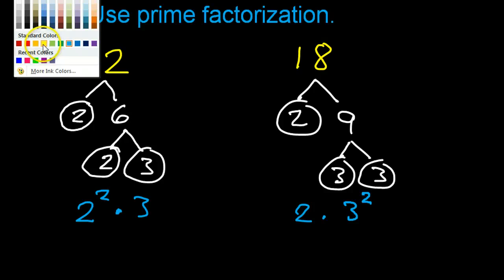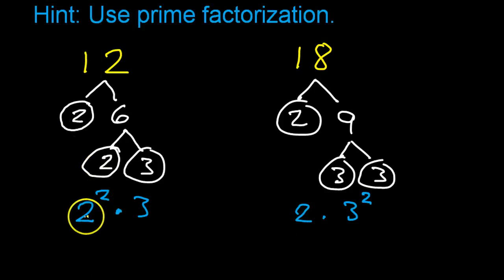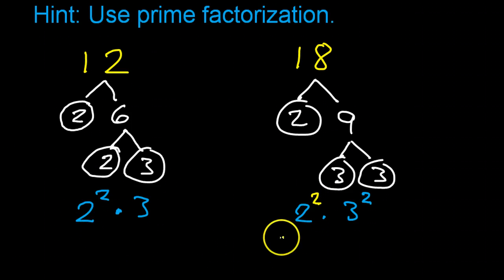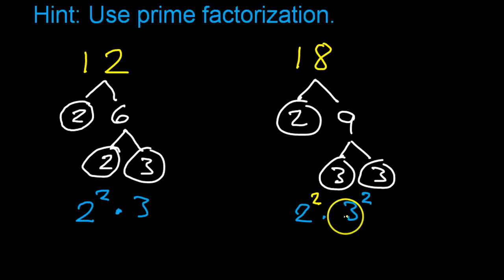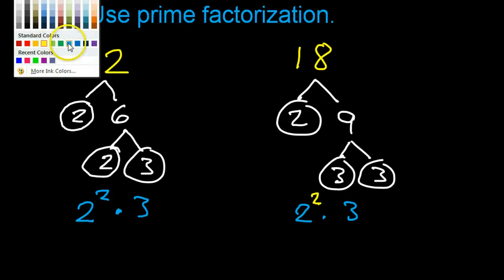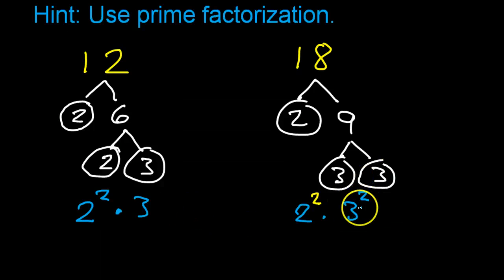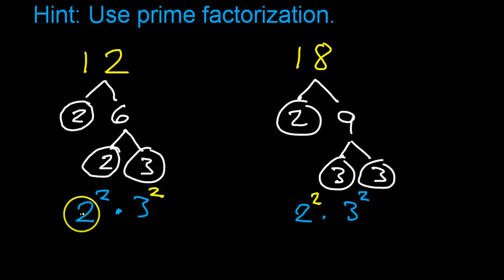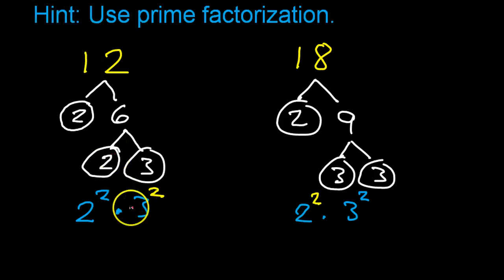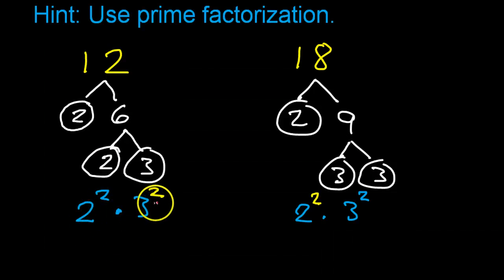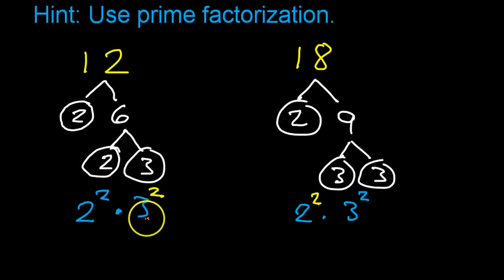Now I want these to be the same. First I look at the 2s: this has 2 squared, and this only has 2. I'll have to square this, so now they're both 2 squared. Now look at the 3s: this is 3, but this is 3 squared. You can only make more, not less — so I can't erase, I can only square this 3. Now they're the same: 2 squared and 3 squared. So 2 squared is 4, 3 squared is 9, and 4 times 9 is 36. The least common multiple is 36.